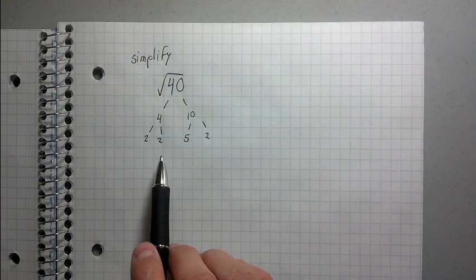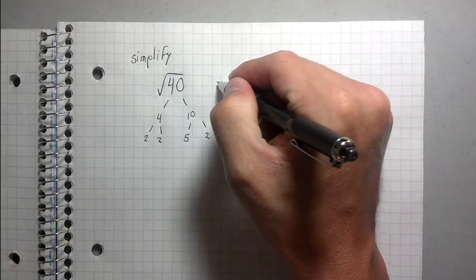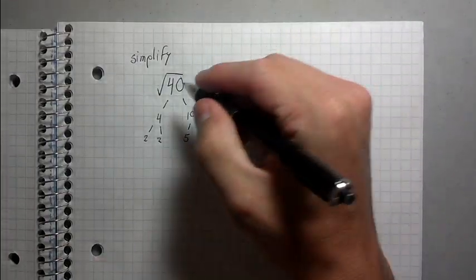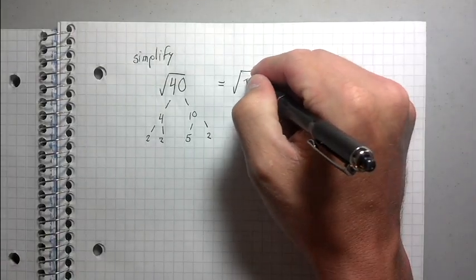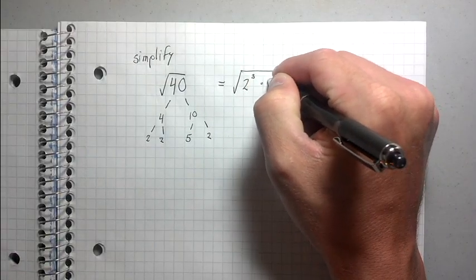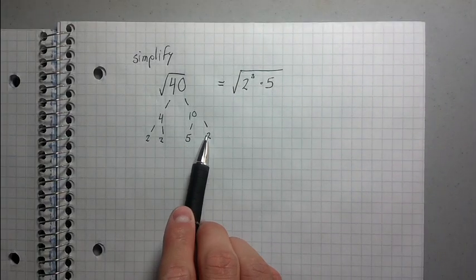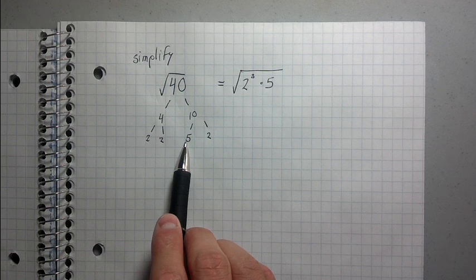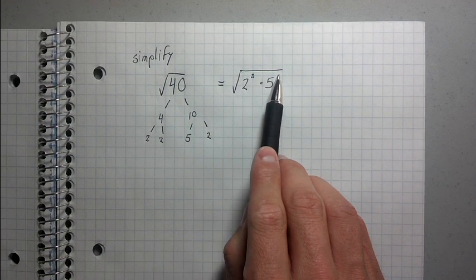So this is actually going to help me to simplify it. So what I'm going to do is I'm going to rewrite root 40 as the square root of 2 cubed times 5. Now, why did I do that? Because do you see how I have three 2's and one 5? So there's three 2's and one 5, because this is really 5 to the 1.